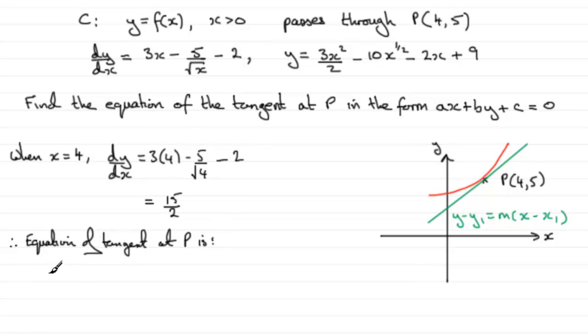We'll drop to a new line here, and we'll put Y minus Y1, Y1 there being the 5, equals M, the gradient, which is 15 over 2, multiplied by X minus X1. So that would be X minus the 4. So that's basically the equation of the tangent, but we need it in this particular form.